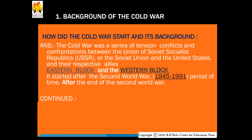Now the first point: how did the Cold War start and its background. Before understanding this, you have to know what the Cold War is. The Cold War was a series of tensions, conflicts, and confrontations between the Union of Soviet Socialist Republics — USSR or the Soviet Union — and the United States, and their respective allies: the Eastern Bloc and the Western Bloc. It started after the Second World War, covering the period from 1945 to 1991.